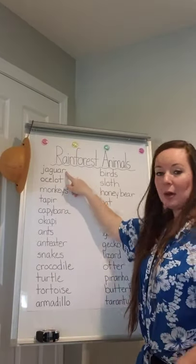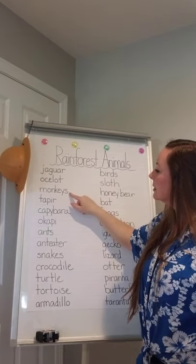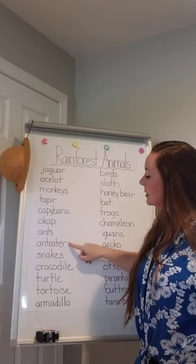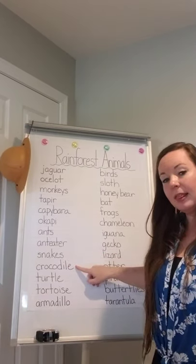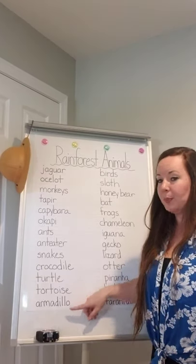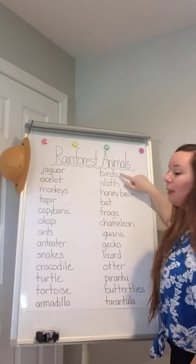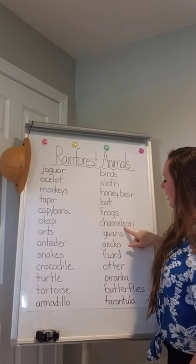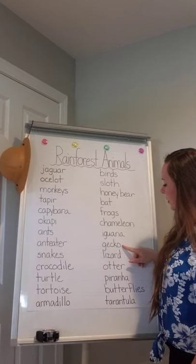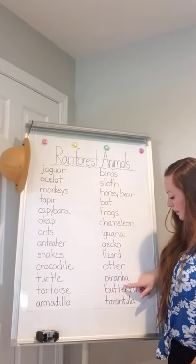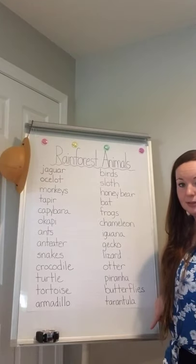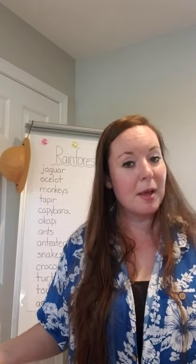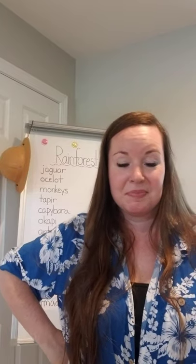I'm going to say each name and I want you to repeat after me. Here we go: jaguar, ocelot, monkeys, tapir, capybara, okapi, ants, anteater, snakes, crocodile, turtle, tortoise, armadillo, birds, sloth, honey bear, bat, frogs, chameleon, iguana, gecko, lizard, otter, piranha, butterflies, tarantula. Awesome job listening to this whole video — I know it was a long one, but we've got so many animals and creatures in the rainforest. More than half of the world's animals are found in this ecosystem. Great job everybody!